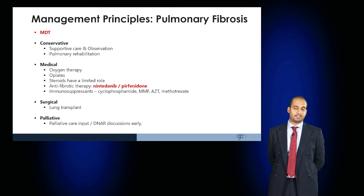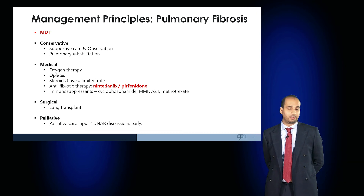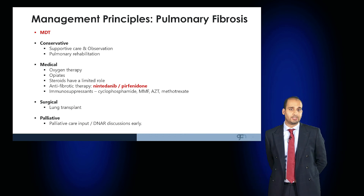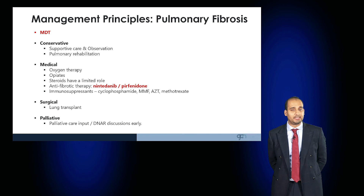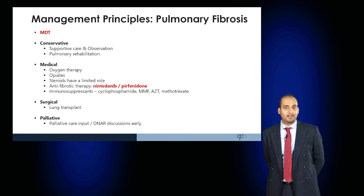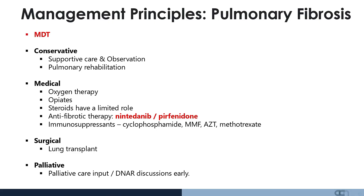Management of pulmonary fibrosis requires a multidisciplinary, patient-centred, holistic approach. Conservatively, supportive care, observation, and pulmonary rehabilitation are important. Medically, patients may require long-term oxygen therapy. Opiates can help with anxiety and difficulty breathing. Steroids have a limited role. Antifibrotic therapy with pirfenidone or nintedanib can help in certain cases. Immunosuppressants such as cyclophosphamide, mycophenolate mofetil, azathioprine, and methotrexate are also used. In refractory cases, following an MDT decision, the patient may be eligible for a lung transplant. If the disease is more advanced, palliative care input is required, and discussions about escalation and do not attempt resuscitation orders should happen early, as such patients do not do well in an intensive care setting.